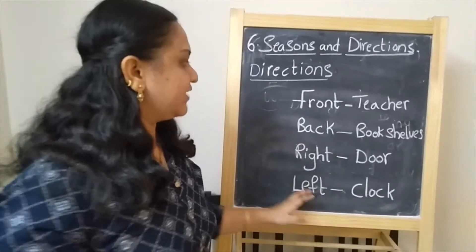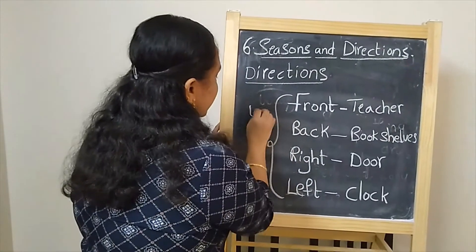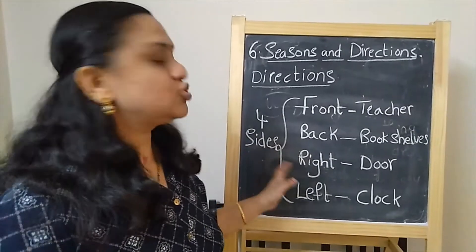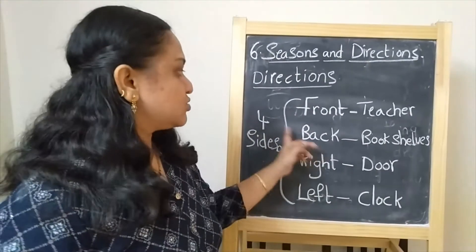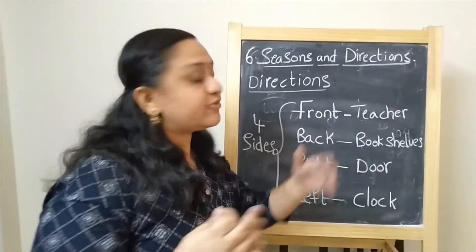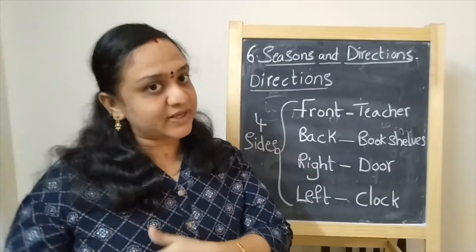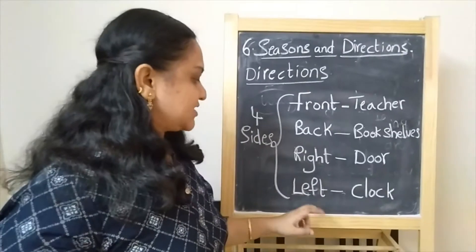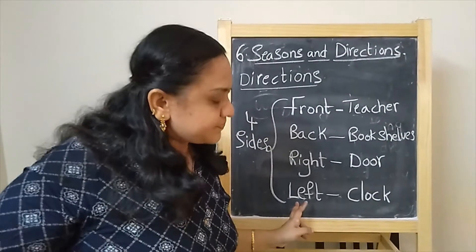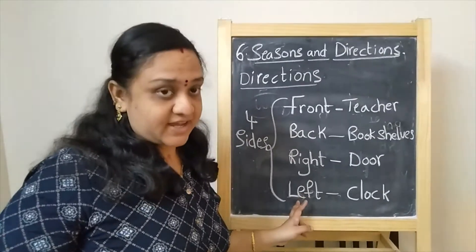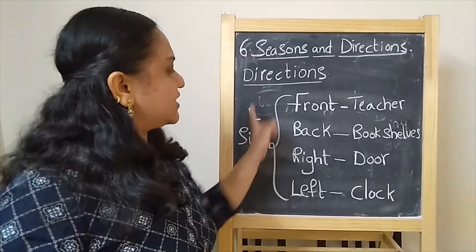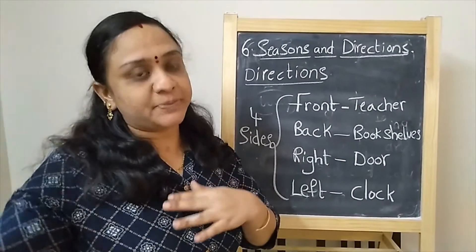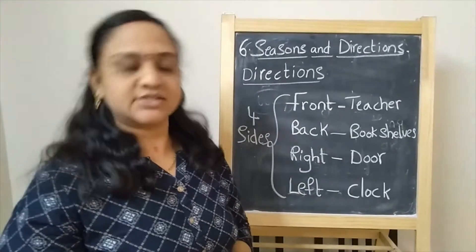So the front, back, right, left — all these are the four sides. These sides are helping us to move in a direction. When the teacher called you, you moved in the front direction. When the teacher told you to bring the books, you went in the back direction. When the teacher told you to close the door, you went to the right side. When the teacher told you to see the clock, you looked to the left side. These four sides help us to know about the directions. Now we will go to the picture screen to understand more about directions.